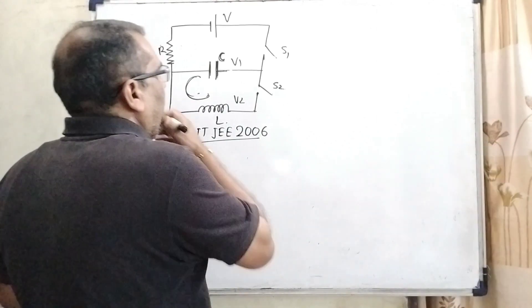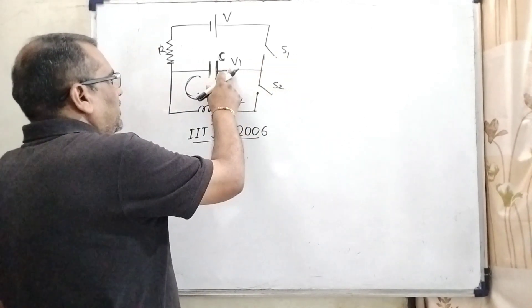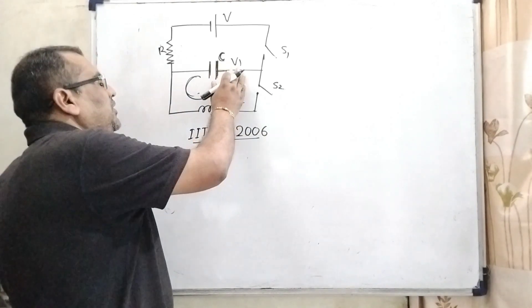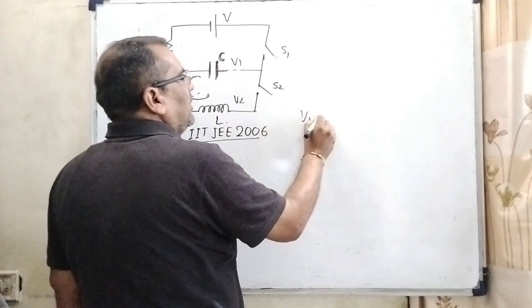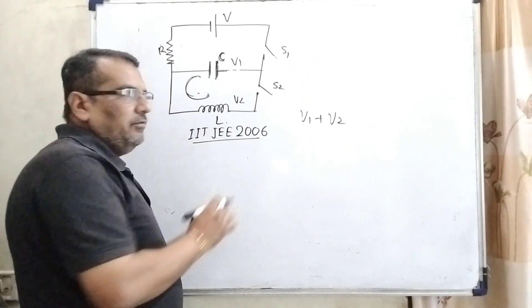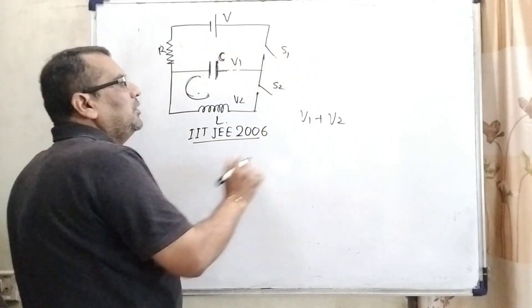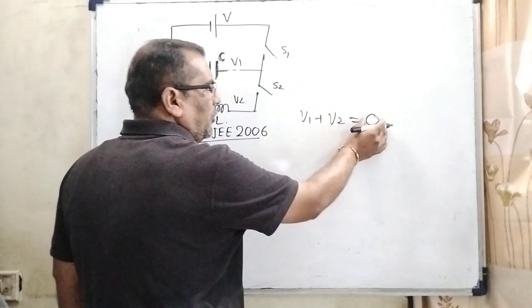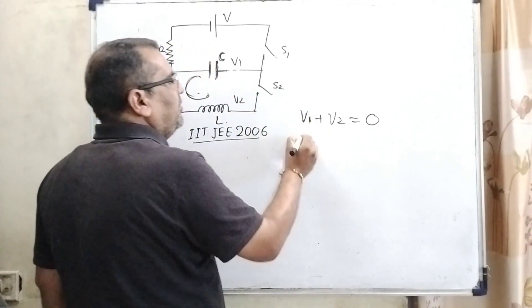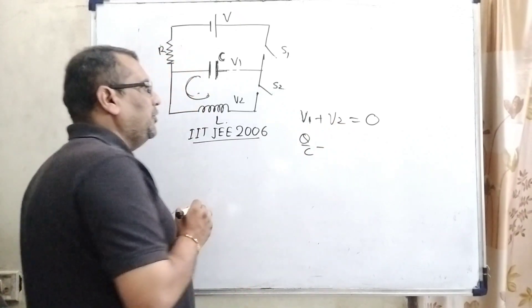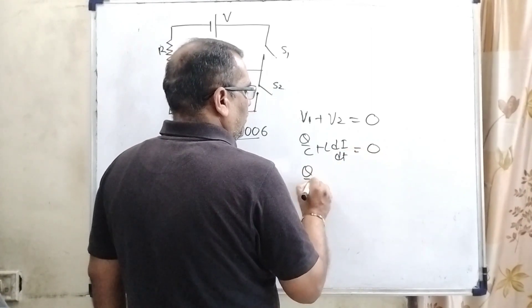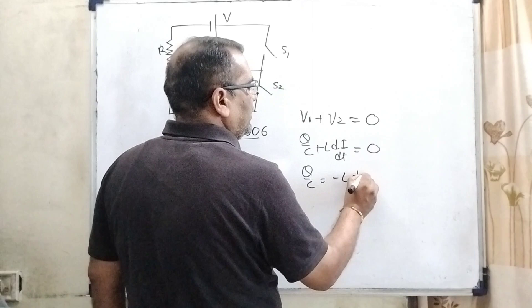Now, according to the given condition, S1 is opened and S2 is closed, that time capacitor and inductor are in series, so we use Kirchhoff's closed circuit law. Here let us consider the potential due to the capacitor that is V1 and potential due to the inductor that is V2. When S1 is open, then there is no any input potential so we consider 0. And what is V1 potential due to the capacitor? It can be written as q by C. And potential due to the inductor can be written as L into di by dt equal to 0.